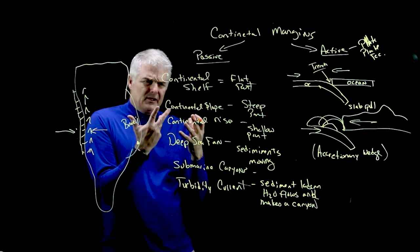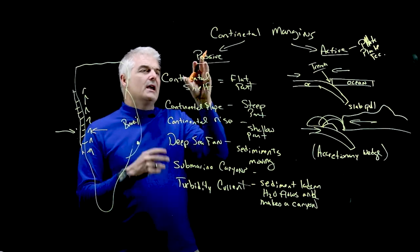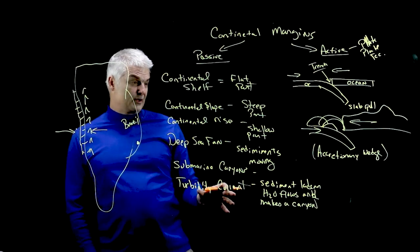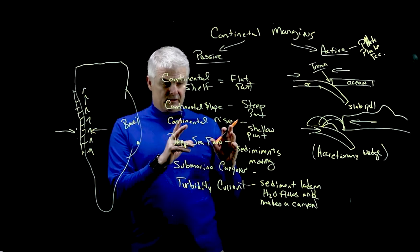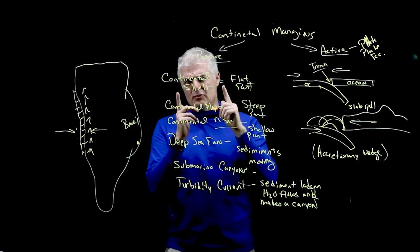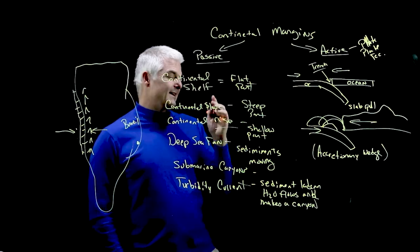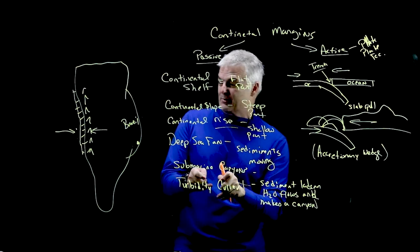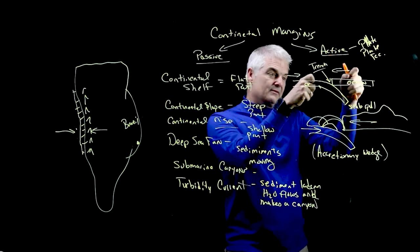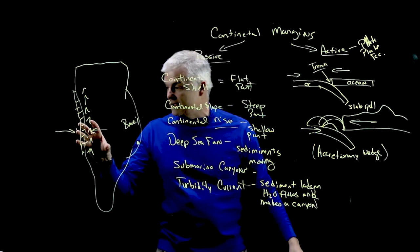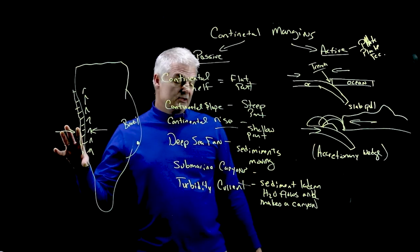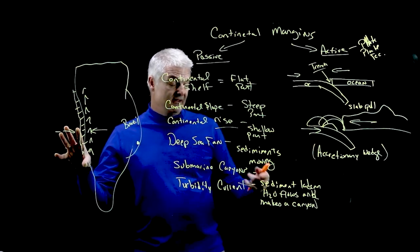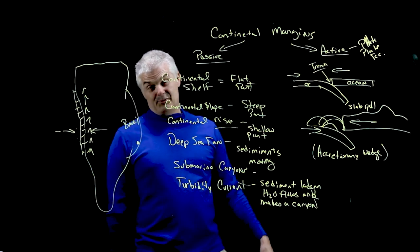So continental margins have an interesting feature. You know, it's the edge, right? And we've got the passive stuff with the cool picture and rises and slopes and fans and turbidity currents and submarine canyons. But we look at the margins or the active, oh, we can get trenches or we can get accretionary wedges. Houston. We got this. We'll see you in class.